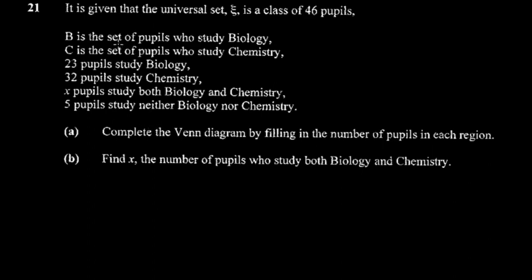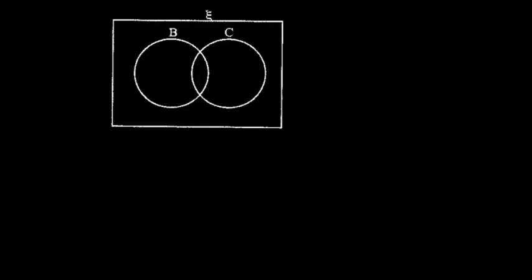Thanks so much Brian. The universal set is a class of 46 pupils. B is a set of pupils who study biology, C is a set of pupils who study chemistry. 23 pupils study biology, 32 pupils study chemistry, x pupils study both biology and chemistry, and five pupils study neither biology nor chemistry. This paper was really difficult.